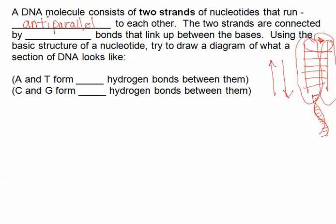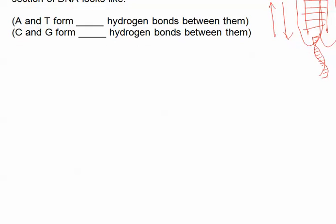The two strands are connected by hydrogen bonds. And we've talked about hydrogen bonds. They've been very important in many of the things we've been talking about with the properties of water that will link up between the bases. And using the basic structure of a nucleotide, this asks us to try to draw a diagram of what a section of DNA looks like. So what I'm going to do is I'm going to scroll down a little bit here. Let me start with one Lego unit. Remember how to draw this?